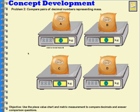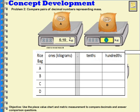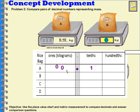Let's compare some decimal numbers that represent mass. I have bags of rice on the scale, and I can click here to reveal what part of a kilogram the mass is of each bag. So bag A is one-tenth of a kilogram. I'm going to use this chart to help me record the mass. How many whole kilograms? Zero whole kilograms — I'll put in my decimal. I have one-tenth, and I don't have any hundredths listed, but I could say I have ten-hundredths. One-tenth has ten-hundredths in it.